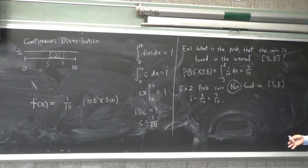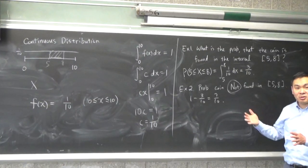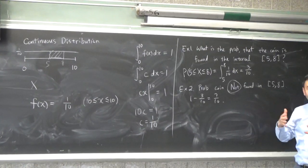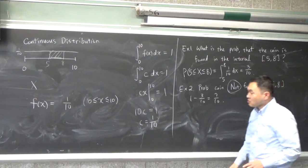So, you can basically ask what's the probability of the coin being found from here to there, from here to there. Those are easy questions.